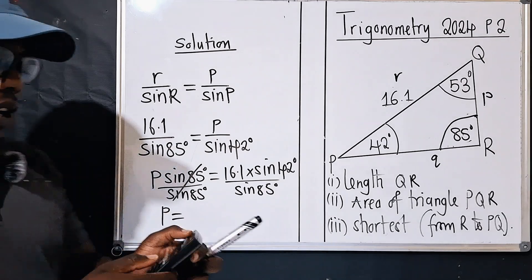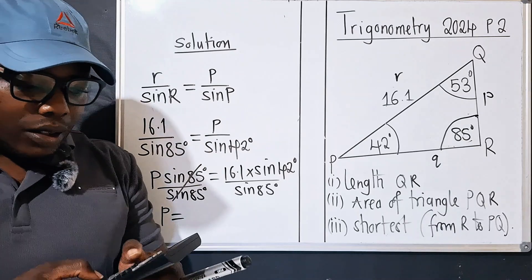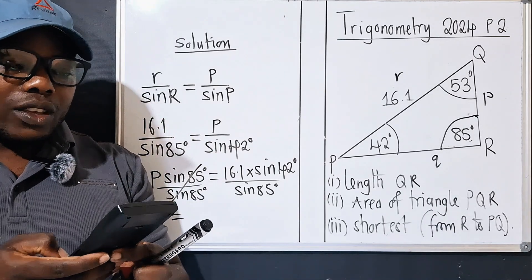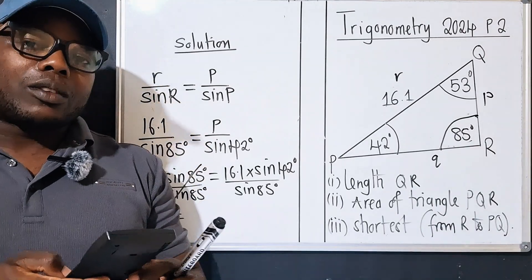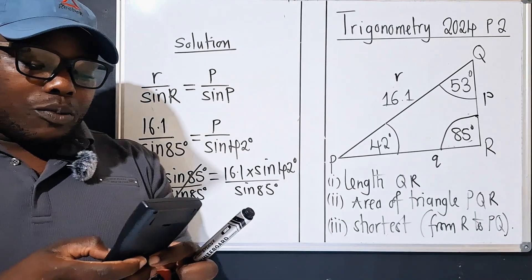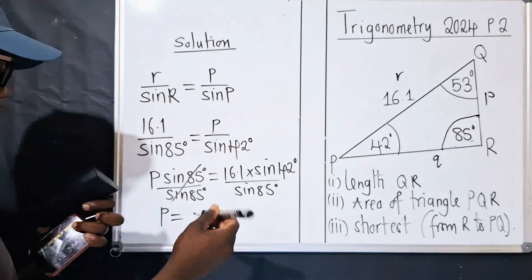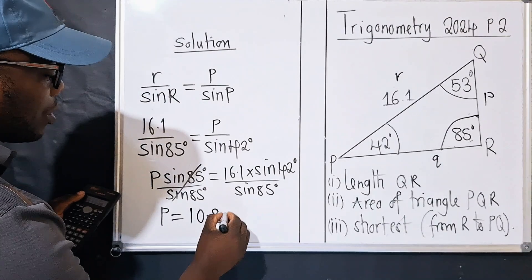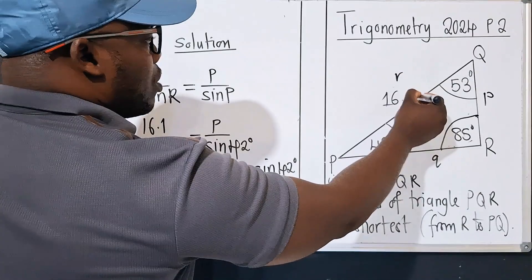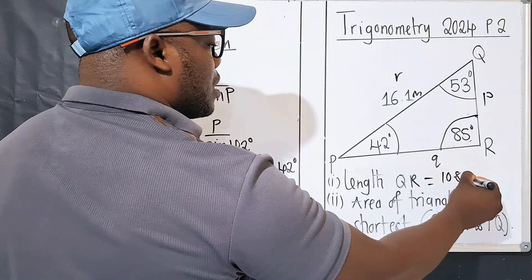Dividing both sides by sin 85°, the sin 85° terms cancel. On the calculator, with degrees mode: 16.1 times sin 42° gives approximately 10.773, divided by sin 85° gives us p equals approximately 10.8 meters. So the side QR is 10.8 meters.